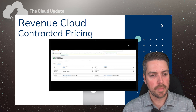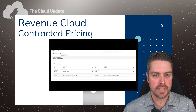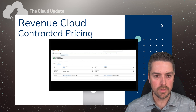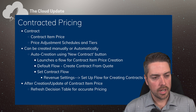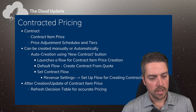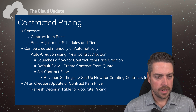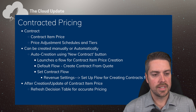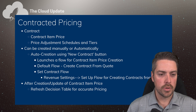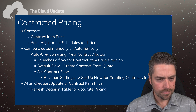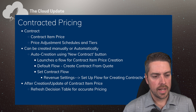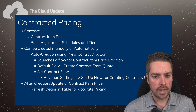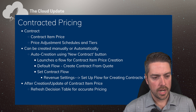Hello everyone, today we're going to be talking about contracted pricing in Revenue Cloud. Contracted pricing operates on a couple different objects: first being contracts, then your flat contracted price is held on the contract item price object, and you can also have discount schedules and tiers through the price adjustment schedule and price adjustment tiers object.